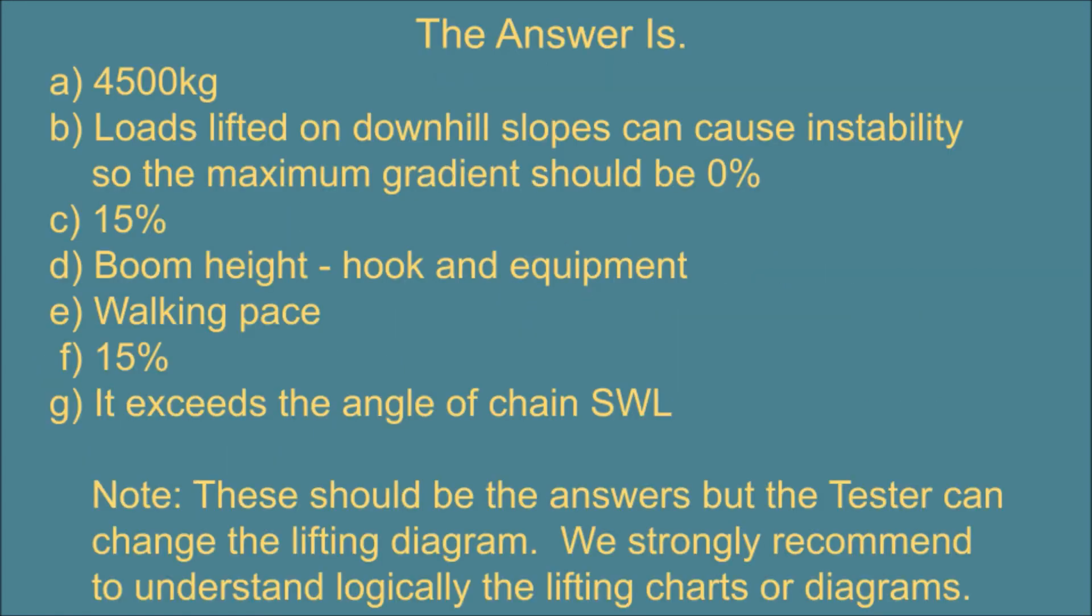The answer is: F. 4,500 kg. B. Loads lifted on downhill slopes can cause instability so the maximum gradient should be 0%. C. 15%. D. Boom height, hook and equipment. E. Walking pace. F. 15%. G. It exceeds the angle of chain SWL. Note, these should be the answers but the tester can change the lifting diagram. We strongly recommend to understand logically the lifting charts or diagrams.